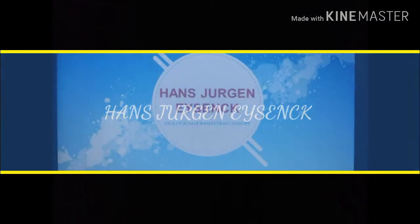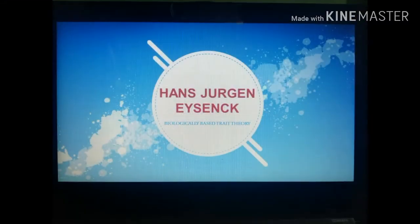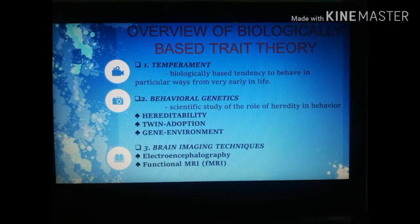Today I will be reporting about Hans Gergen Eysenck and his biologically-based trait theory. Eysenck developed a factor theory much like McCrae and Costa, but instead of having five dimensions of personality, he only derived three: extroversion/introversion, neuroticism and stability, and psychoticism.